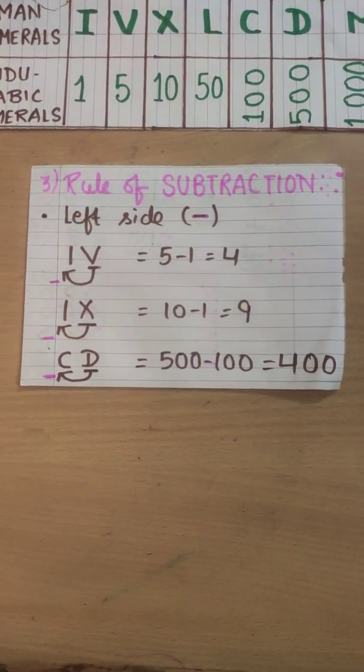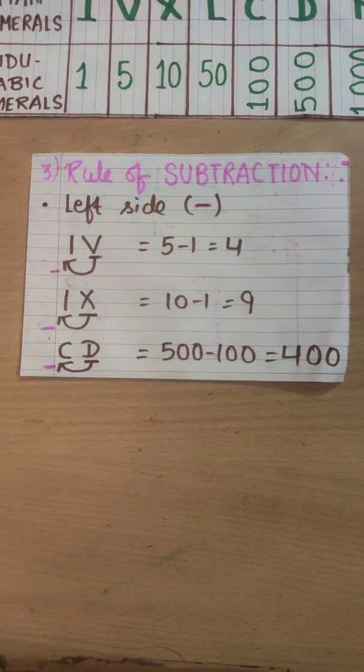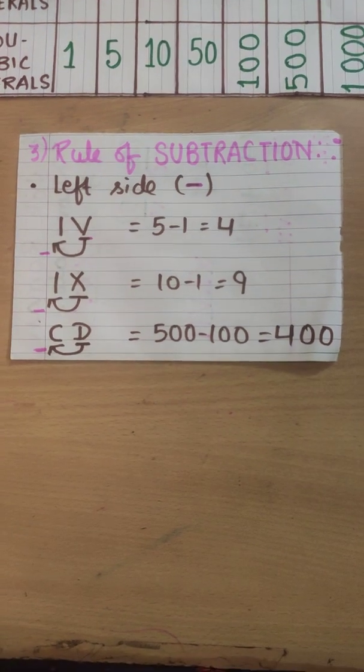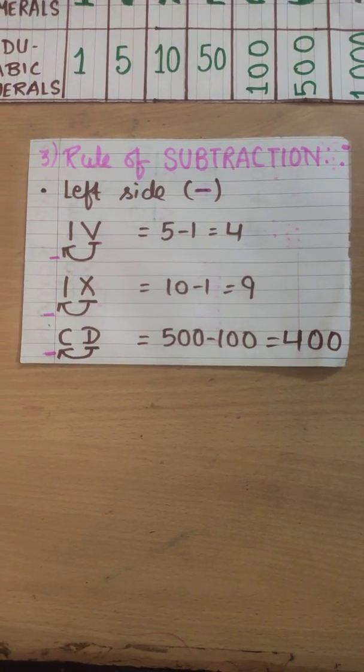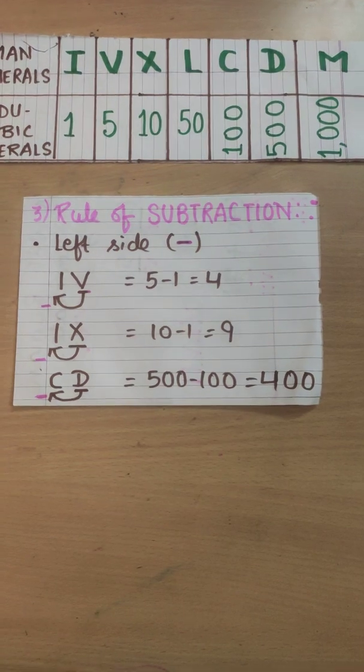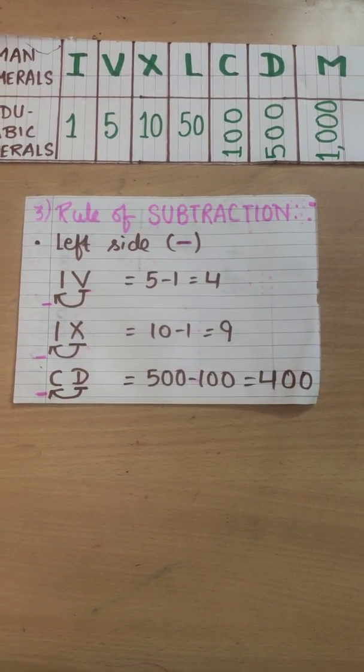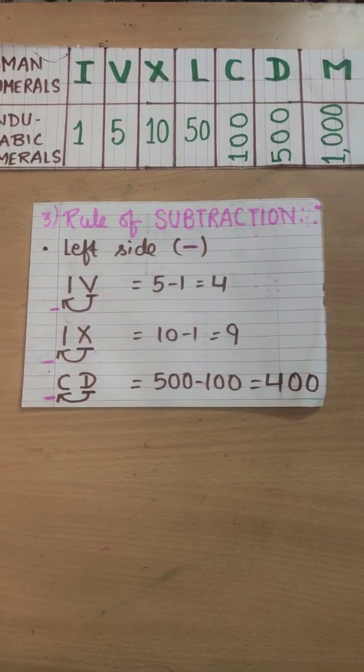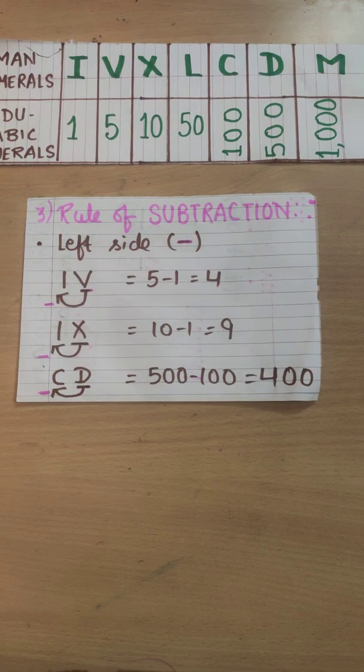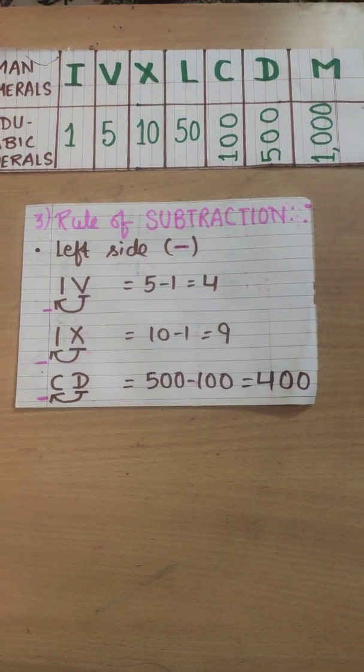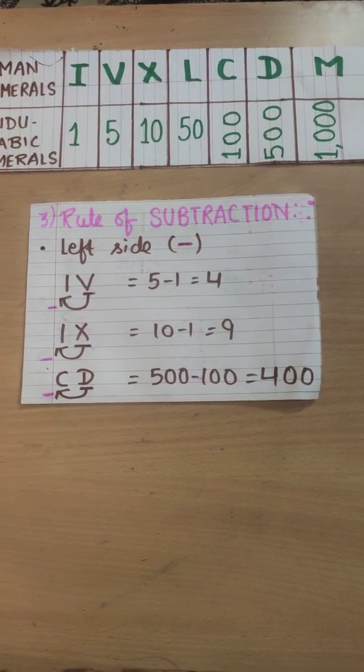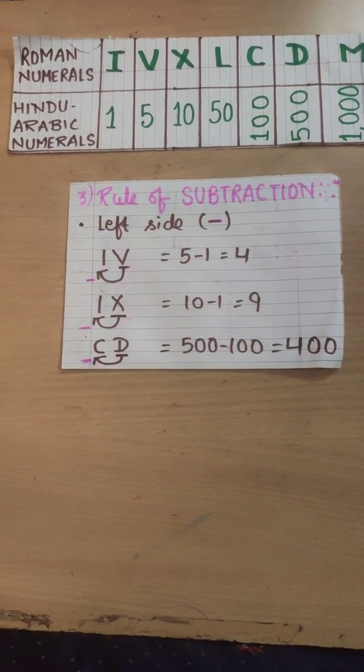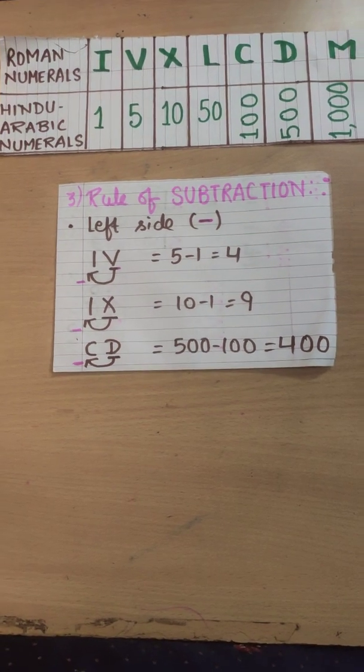IX. X is the greater symbol. 10 minus 1 equals to 9. CD. What does C denote? C denotes to 100 and D denotes to 500. D is the greater symbol. And C is in left of it. It means 500 minus 100 which is 400. These were the three rules through the help of which we are here to write our Roman numerals as well as our Hindu Arabic numerals.